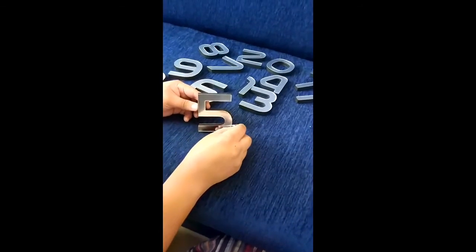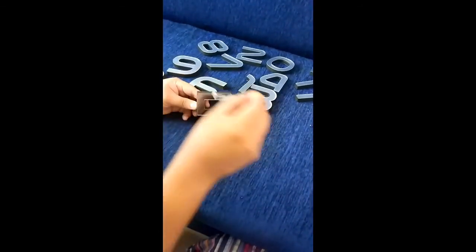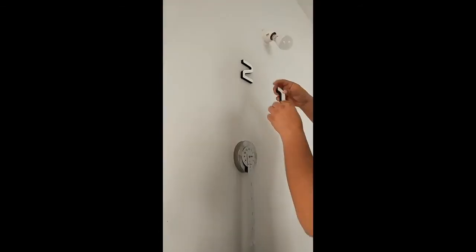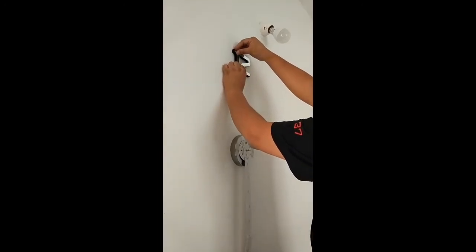We will remove all the acrylic mirror digits and remove the protective form. Peel off the back paper of EVA and stick all the digits to the wall.